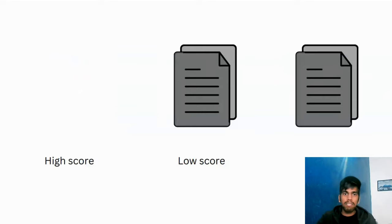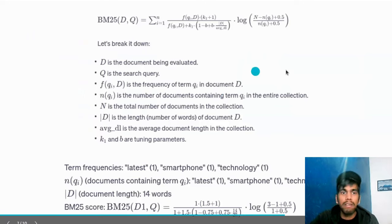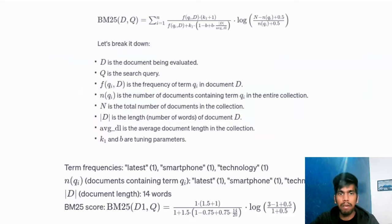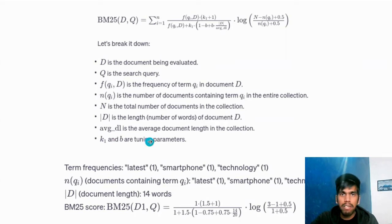How do we find this particular score? This is where we have BM25. In the formula, D stands for the document being evaluated, Q is the search query which can be the user query, and then we have a function calculating the frequency of the term in the given document. We also have N to the power of QI, which is the number of documents containing that particular term. N stands for the total number of documents in the collection. The magnitude of D is the length — the number of words present in your original document D that you are evaluating. Then we have average D, which is the average document length in the given collection.